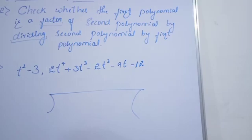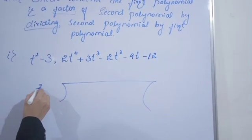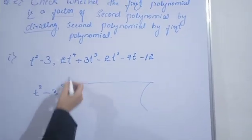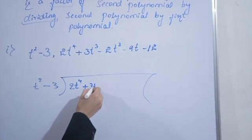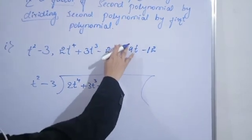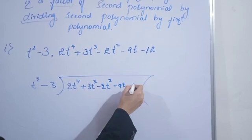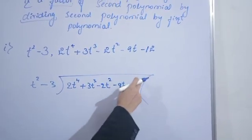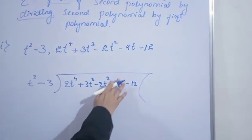Chalo start karte hain. Divisor is t² - 3. The second polynomial is 2t⁴ + 3t³ - 2t² - 9t - 12. Arrange in descending order: four, three, two, one, constant. Chalo divide karna start karte hain.